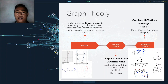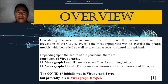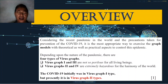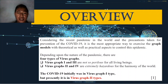Considering the recent pandemic and the precautions taken for prevention of COVID-19, it is most appropriate to use graph models with theoretical as well as practical aspects to control this epidemic. Depending upon the nature of the epidemic, there are four types of virus graphs. Virus graphs one and three are not as hazardous for all living beings, while virus graphs two and four are extremely hazardous for the harmony of the world. COVID-19 initially was in virus graph one type, but presently it is in virus graph two type in some countries.